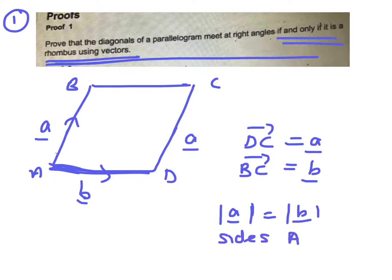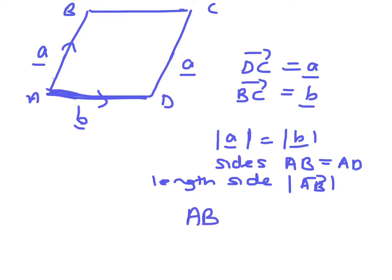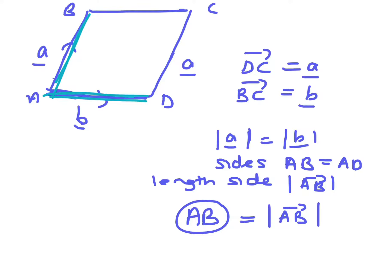Just note that when you want the length of a side, you put bars on the outside of your vector. If you write AB that means the length of AB, which is the same as the magnitude of the vector AB — it's the size of that vector. So this side equals this side, and we'll use that in our proof.